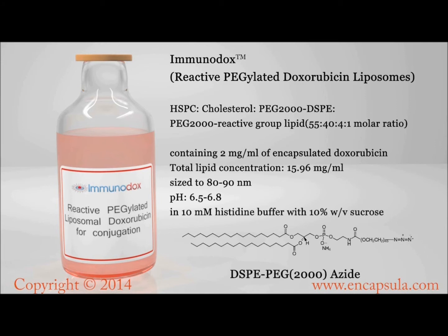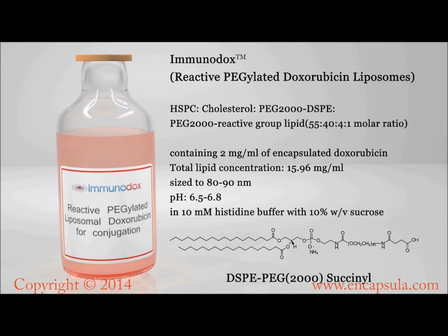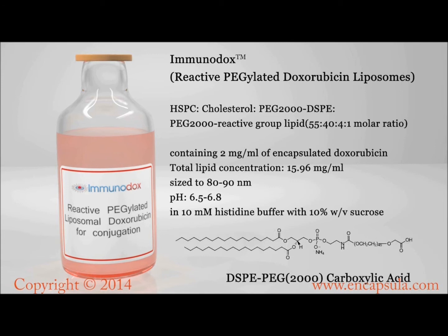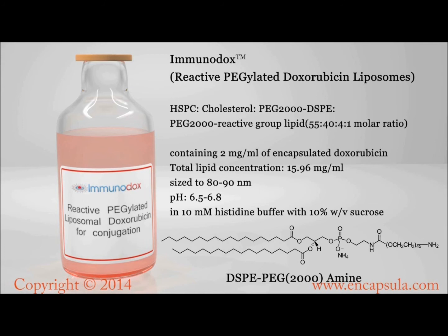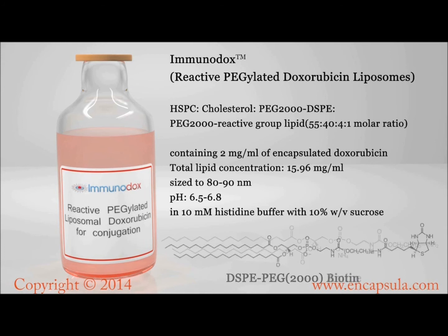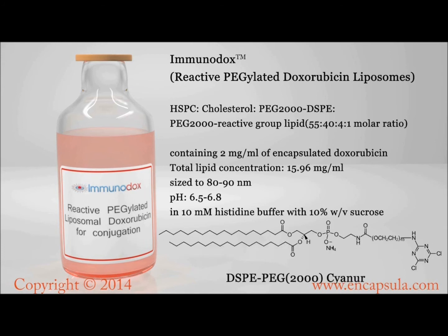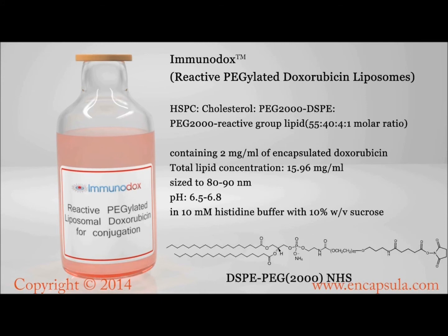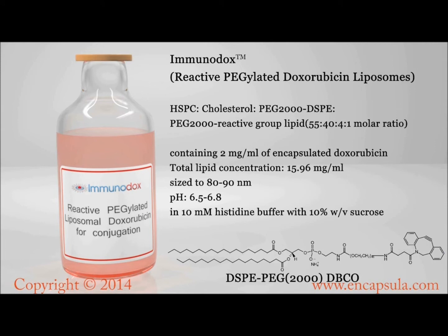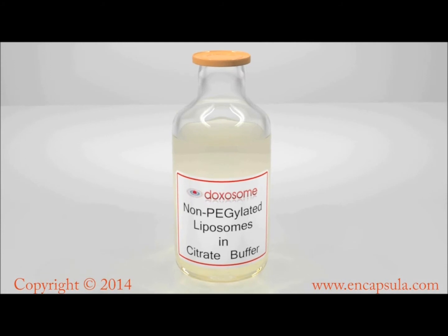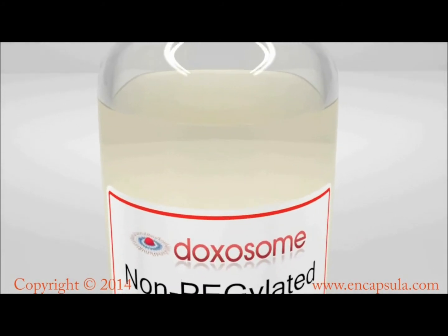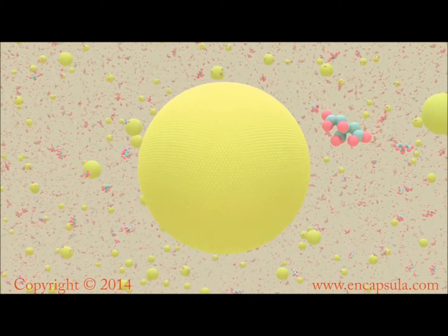The reactive moieties are azide, succinyl, carboxylic acid, maleimide, PDP, amine, biotin, CEONOR, NHS, DBCO, and folate. A non-pegylated form of doxorubicin is also available as non-reactive doxosome or reactive immunodox.